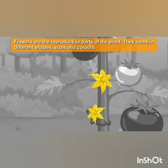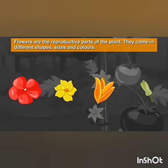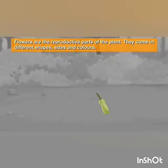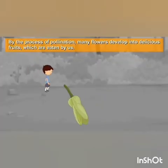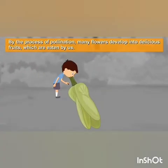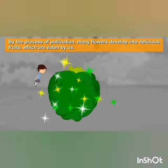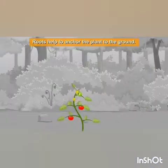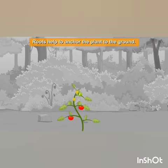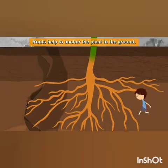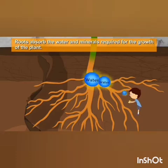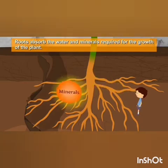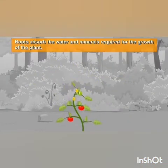Leaves have small openings called stomata through which plants take in and give out air. Flowers are the reproductive parts of the plant. They come in different shapes, sizes and colors. By the process of pollination, many flowers develop into delicious fruits which are eaten by us. Roots help to anchor the plant to the ground. They absorb the water and minerals required for the growth of the plant.